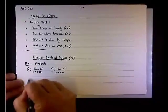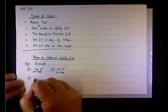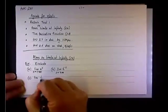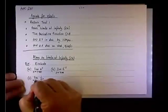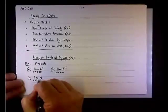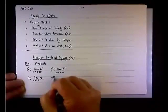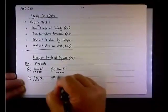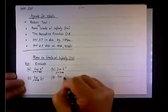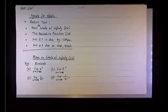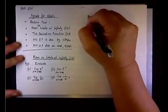Then let's look at the following: C, the limit of one over e to the x as x approaches plus or minus infinity. And then D, the limit of one over e to the negative x as x goes to positive or negative infinity. Those are the four cases that we need to analyze or evaluate.